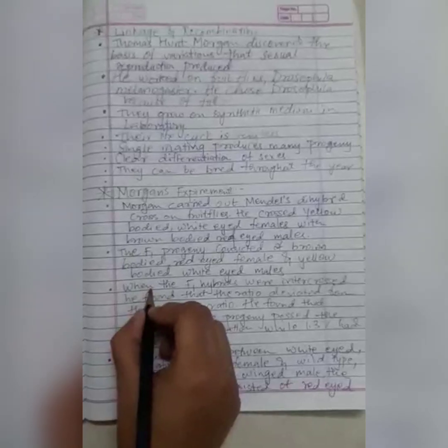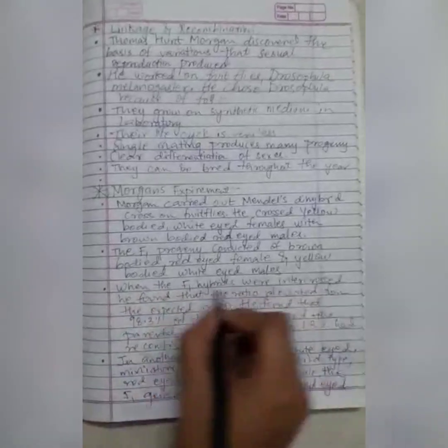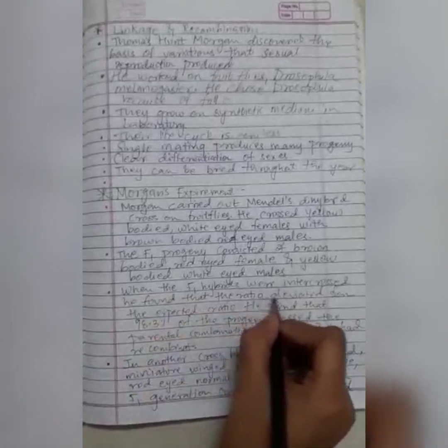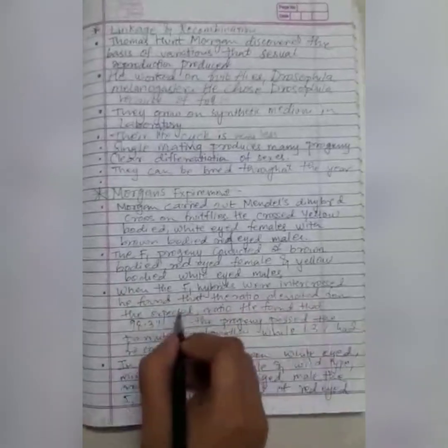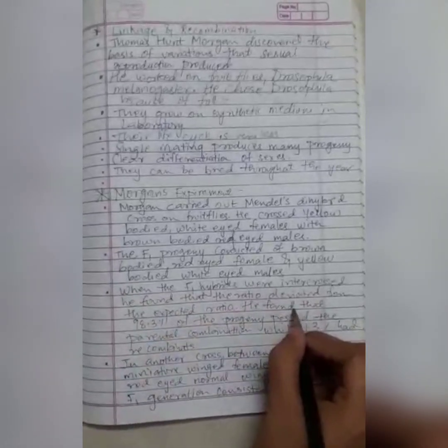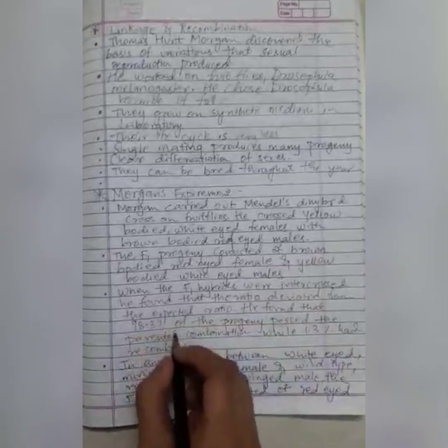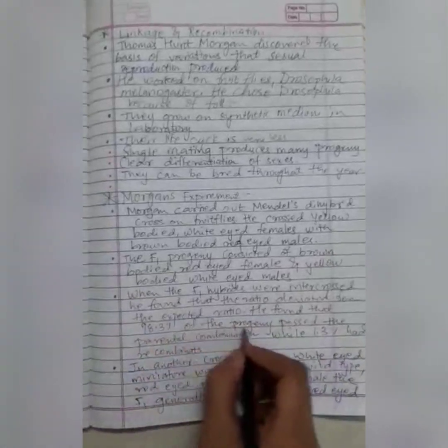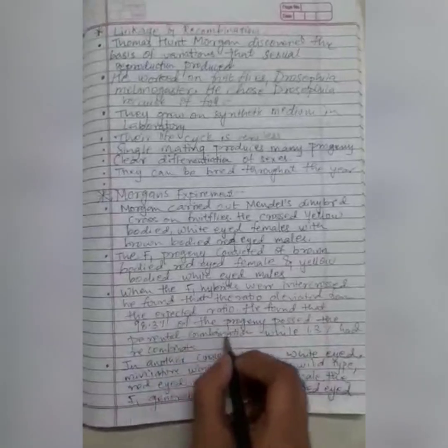When the F1 hybrids were inter-crossed, he found that the ratio deviated from the expected ratio. He found that 98.3% of the progeny possessed the parental combination, i.e. linkage, while 1.3% had recombination.